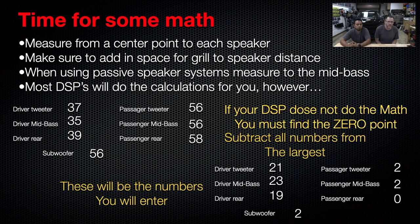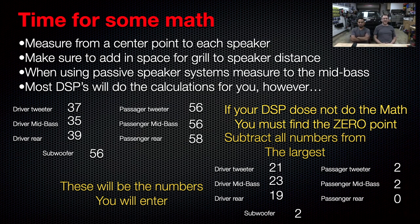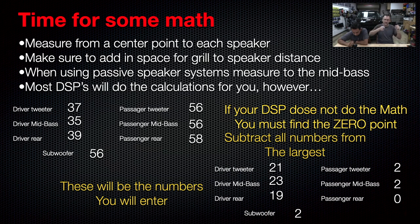Time for some math. How do you do this? Obviously you'd need a DSP, or a radio that has a DSP in it. A radio with a DSP gets a little more complicated, but once you've learned all this you'll figure out what we're talking about. Measure from a center point to each speaker. If you're sitting in your chair and you have a friend, measure from a spot in the center of the headrest — maybe put a piece of tape there or look for a logo — and measure out to each speaker with a piece of paper handy. Make sure to add in space for grill-to-speaker distance.